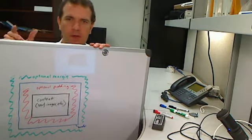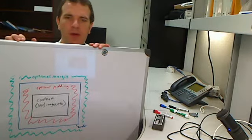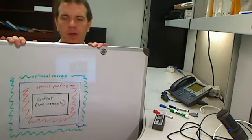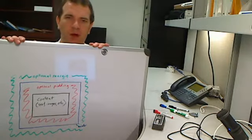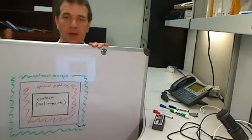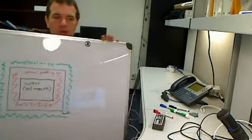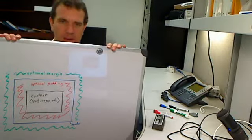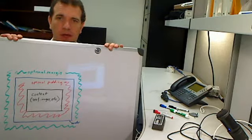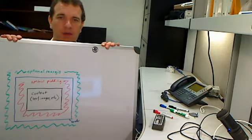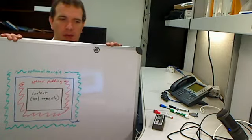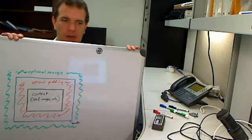That margin space will influence how this content object is laid out relative to the browser window and the other elements on the web page. So we have content, padding, border, and margin. In the rest of this video we're going to demonstrate how you can adjust and measure all of these.